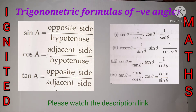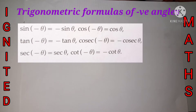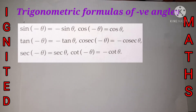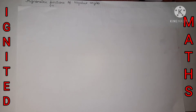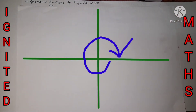We have come across formulas related to positive theta, like sine theta equals opposite upon hypotenuse, and tan theta equals sine theta by cos theta. But sine of minus theta equals minus sine theta — how did that come? And cos of minus theta equals cos theta — how did that come? That question is what this video will answer clearly.